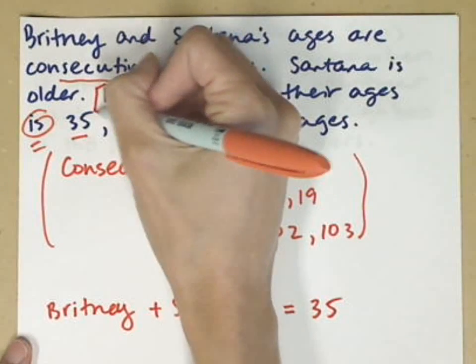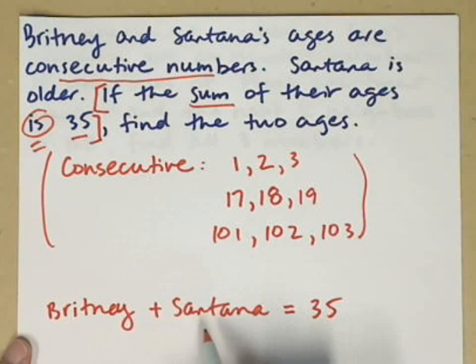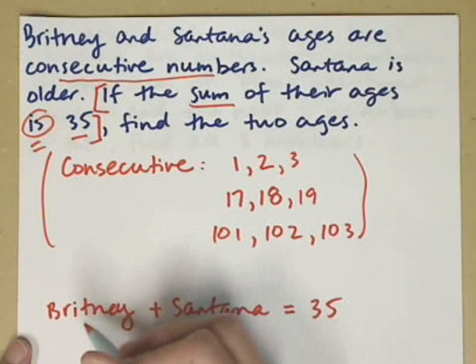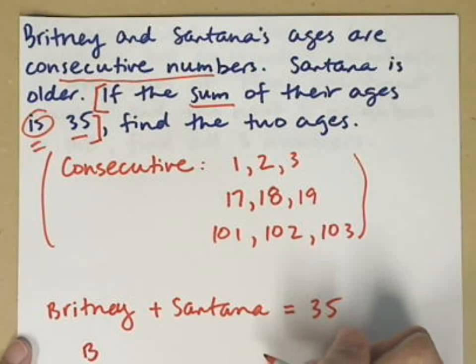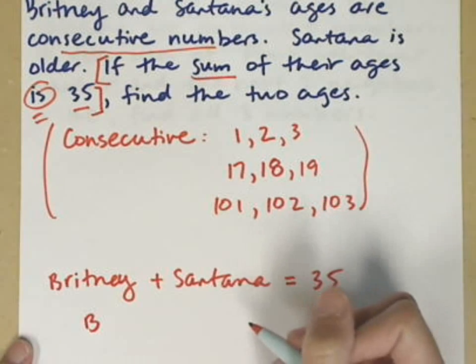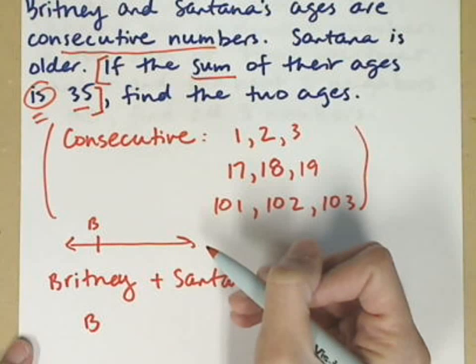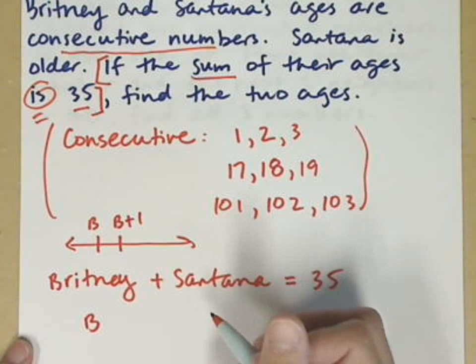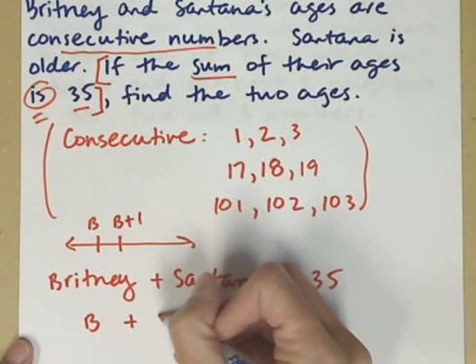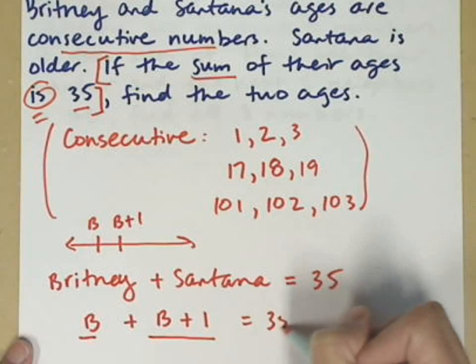So I really just took this phrase right there and changed that into my equation. The sum, so here's their sum, is 35. Now I'm going to use the idea of these consecutive numbers. If I let Brittney's age just be represented by the letter B, then that means Santana's age would be B plus 1, consecutive numbers. So if I put these on a number line and B was here, the number that would be next, the next consecutive number, would be one more, and that would be Santana's age. So B plus the next consecutive number, B plus 1, equals 35.